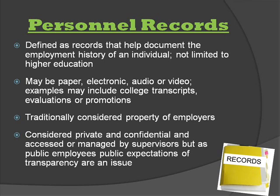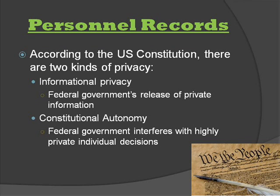However, as public employees, transparency is an issue to the public. According to the United States Constitution, there are two kinds of privacy: informational privacy, which is the federal government's release of private information about individuals, and constitutional autonomy, which regards the federal government's interference with highly private individual decisions. Many state constitutions also have explicit guarantees of privacy, and all states have adopted one or more common law tort claims regarding individual rights to privacy: one, intrusion on seclusion; two, public disclosure of a private fact; three, being placed in a false light publicly; and four, appropriation of another person's name or image.